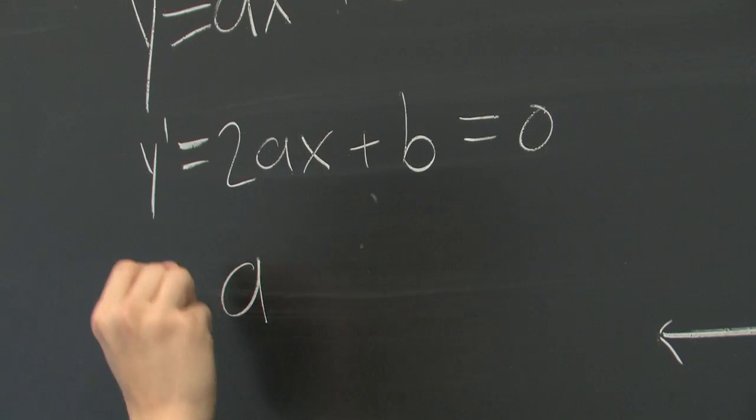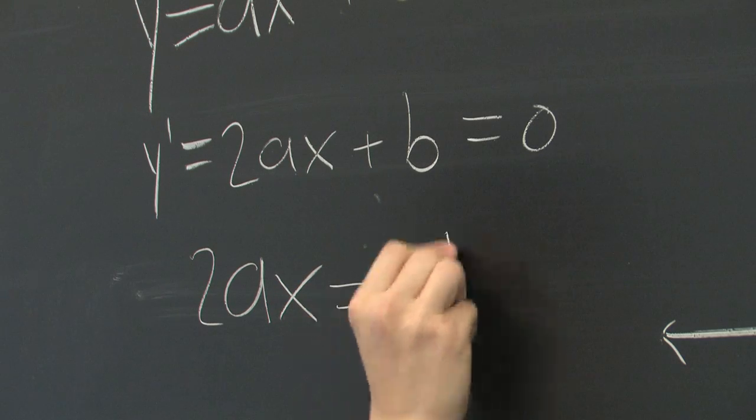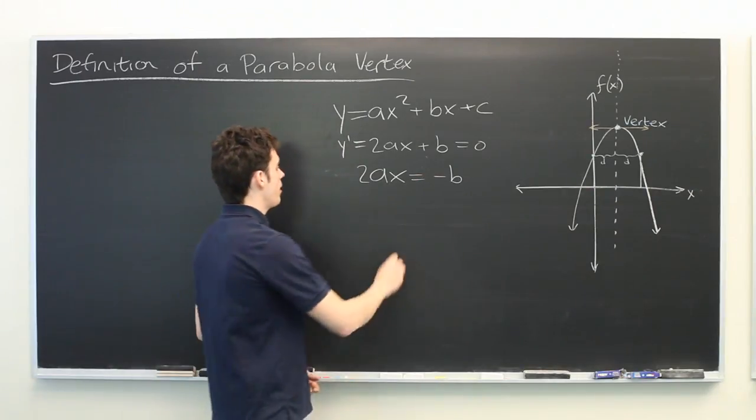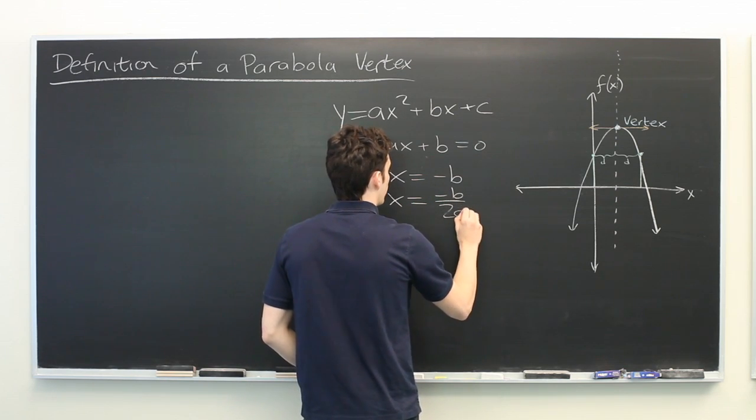If we try to solve for x, we find 2ax is equal to negative b. We divide both sides by 2a. We get negative b over 2a.